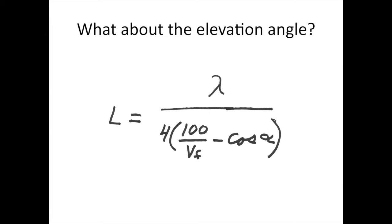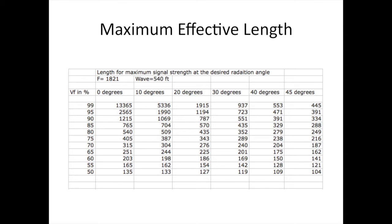Now what about the elevation angle? I was saying that all the formulas were for a zero degree elevation angle. Well if you want to use a practical elevation angle such as 10 degrees, the formula gets a little bit more complicated. The alpha in the formula would be your elevation angle or your takeoff angle. Now back to the same chart we had a minute ago. If you are looking at a velocity factor of say 75 percent, you would be looking at a maximum effective length of 405 feet at zero degree takeoff angle. But if you accept the fact that you are probably going to receive signals from 20 degrees, then the optimum length for receiving signals from a 20 degree elevation angle with a velocity factor of 75 would be 343 feet.